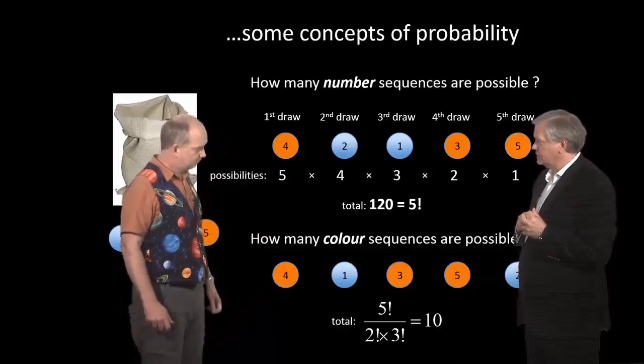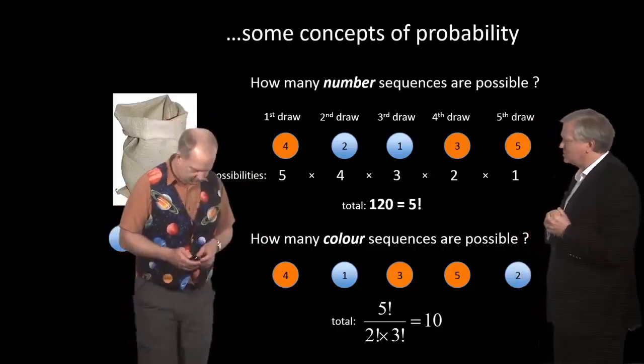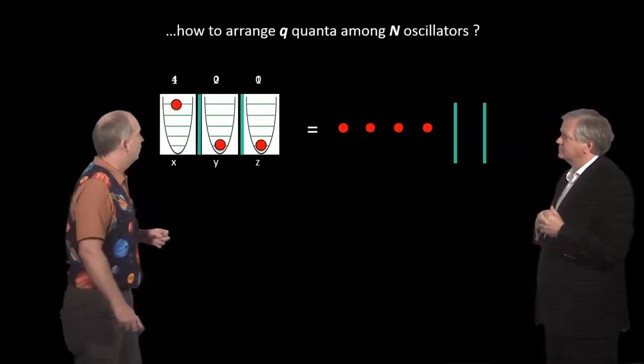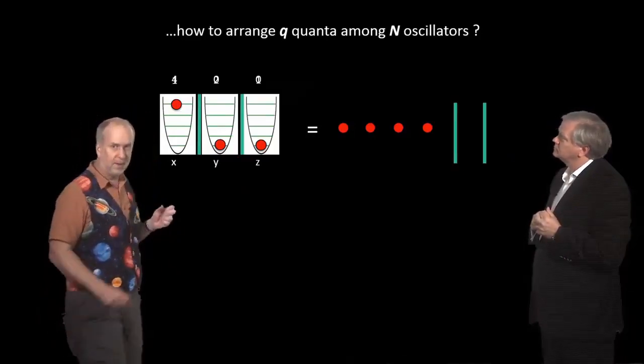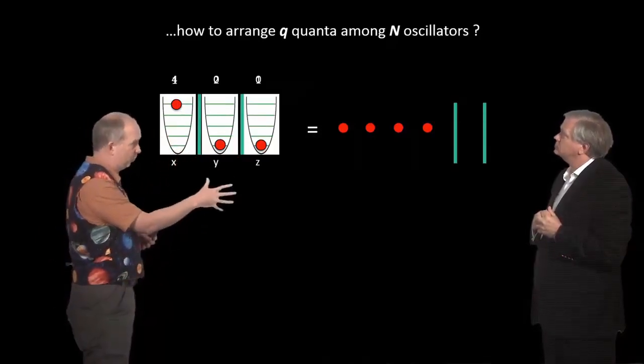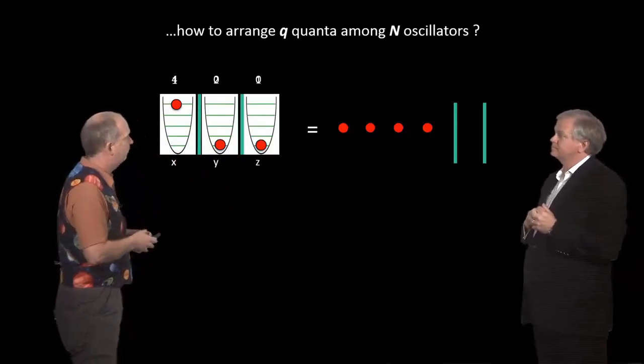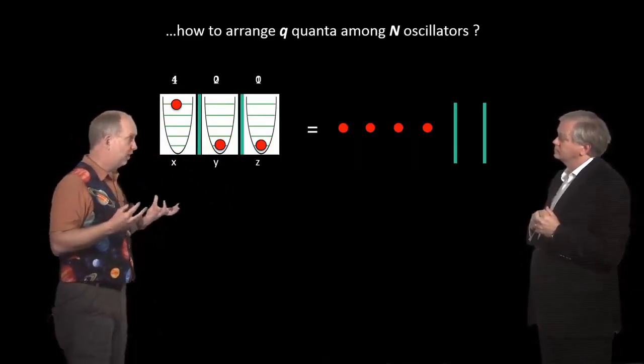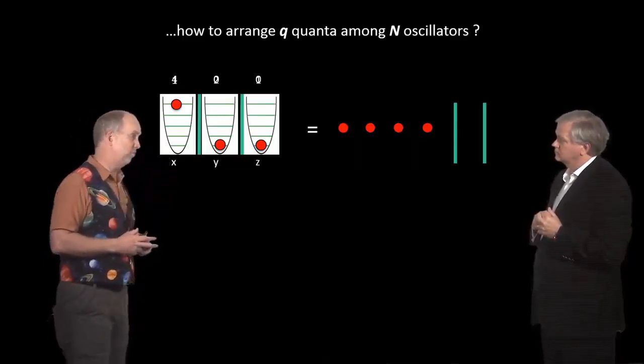So that's a clever little way of doing this. So how is this going to fit into our quantum states, Paul? Well, it turns out very easily. So the idea is, let's say we want to arrange Q quanta among N oscillators. So far we've been dealing with four quanta amongst three oscillators. So what we can think of as being like our blue and our red balls are the quanta and the boundaries.